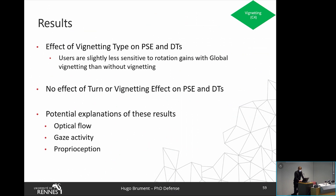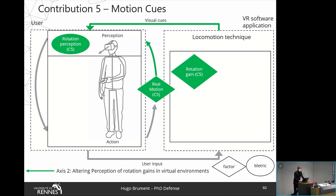The main results of this vignetting study were that we noticed an effect of vignetting type on the PSE and detection thresholds — users were slightly less sensitive to rotation gains with global vignetting than the baseline. However, we did not notice an effect of the amount of rotation or the visual effect on PSE and detection thresholds. To explain these results, we assumed that other factors could be involved in the perception of rotation gains that we did not consider, such as optical flow, gaze activity, and proprioception. This motivated a second study in which we considered users' motion as a factor in the perception of rotation gains.